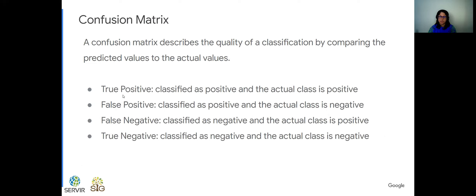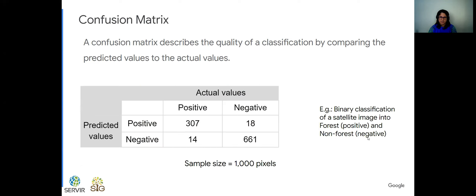To recap: true positive — classified as positive, actual class is positive (forest and forest). False positive — classified as positive, actual class is negative. False negative — classified as negative, actual class is positive. True negative — classified as negative, actual class is negative.